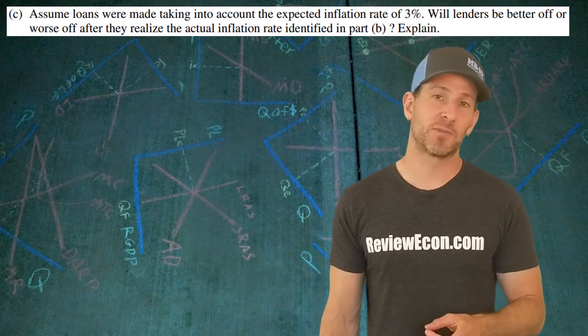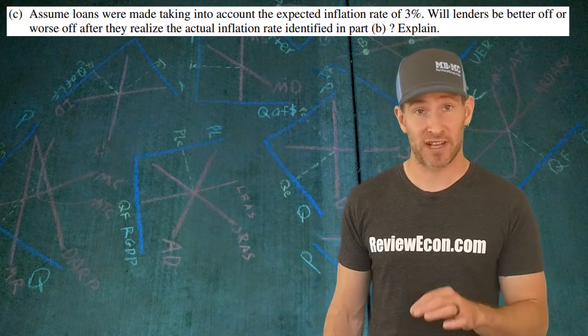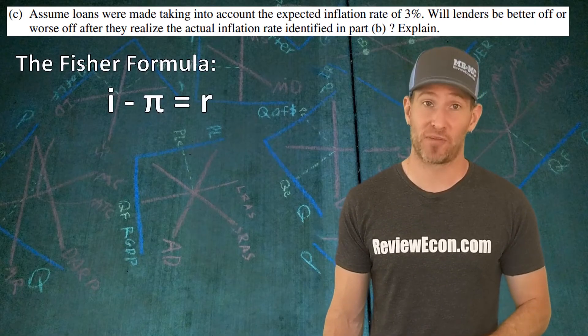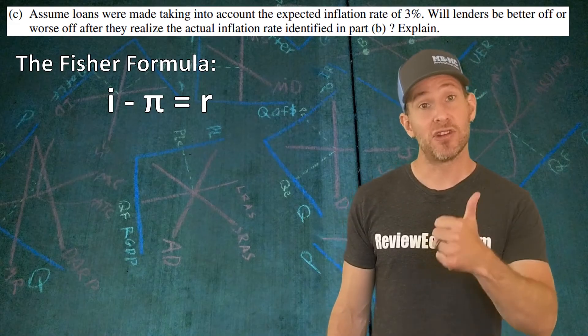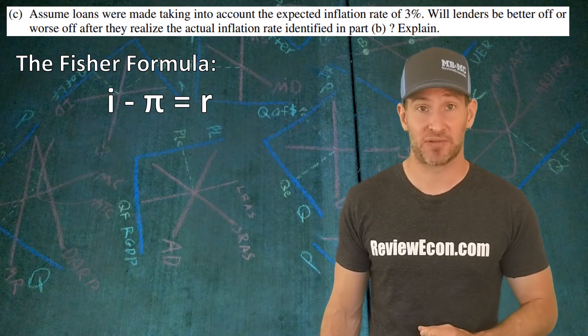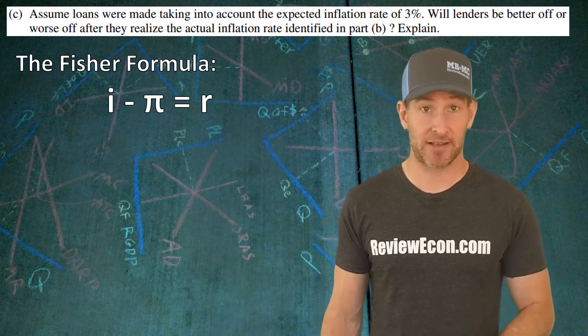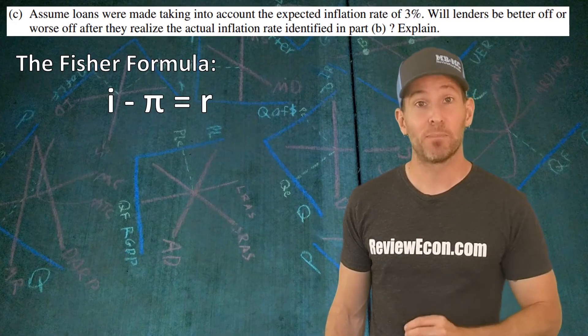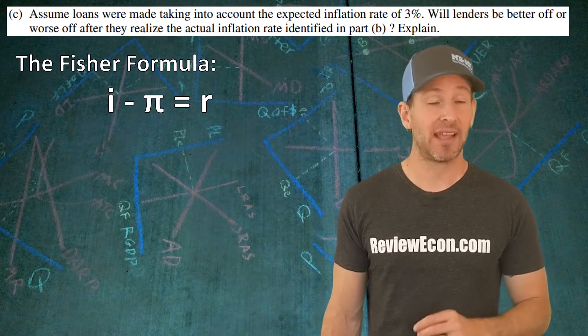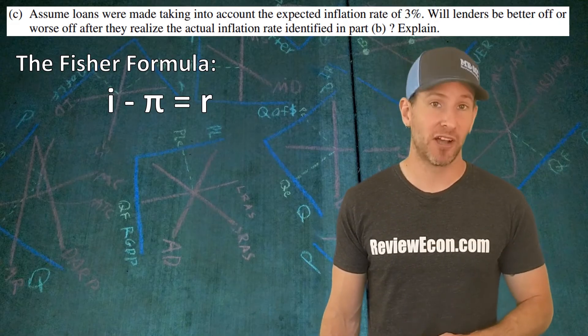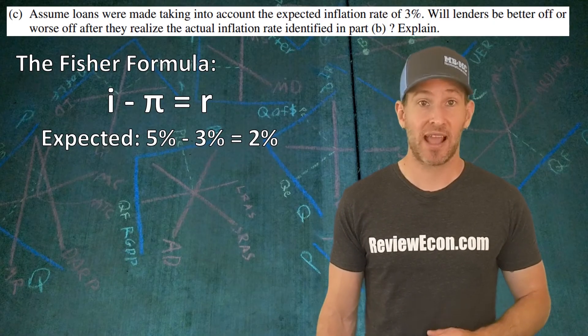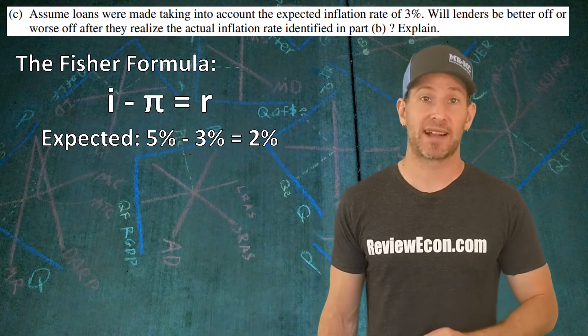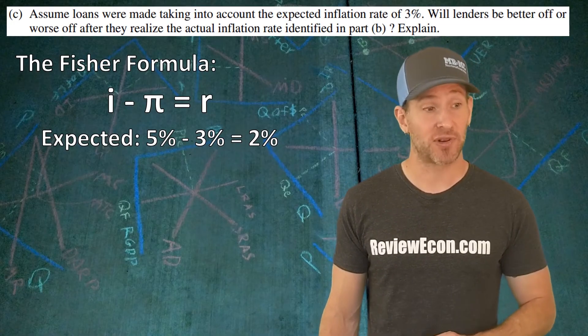For part C, we have to explain if a lender will be better off or worse off as a result of the lower than expected rate of inflation. To answer this question, think about the Fisher formula. The Fisher formula tells us that the nominal interest rate minus the inflation rate will give us the real interest rate. i is the nominal interest rate, R is the real interest rate, and the symbol π is the inflation rate in this formula. If we assume that a lender makes a loan at 5% nominal interest rate, at the expected inflation rate of 3%, that lender expects a real return or a real interest rate of 2%.